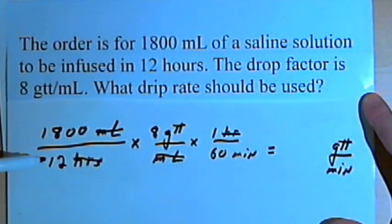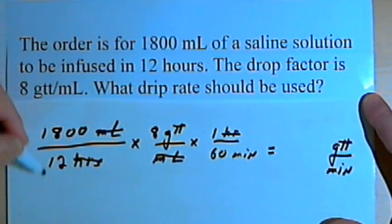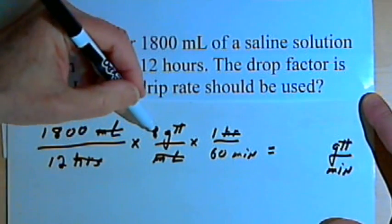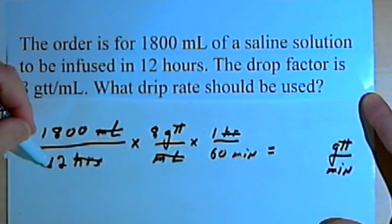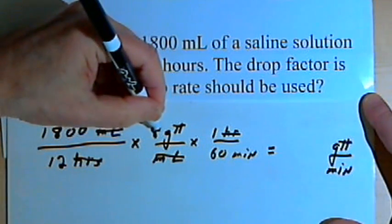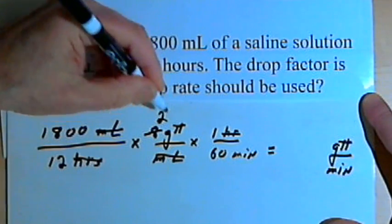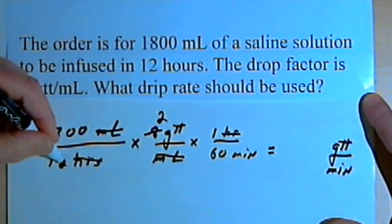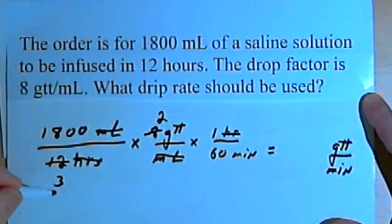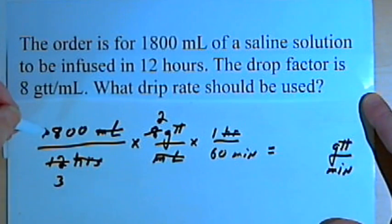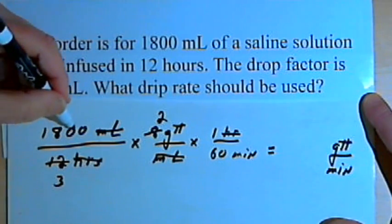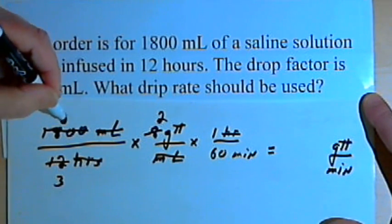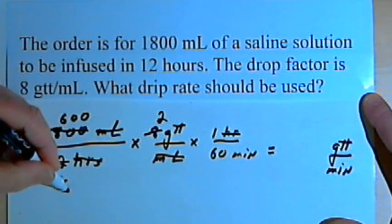Now let's simplify these numbers before we multiply. I've got 8 and 12, I can divide both by 4. So 8 divided by 4 is 2, and 12 divided by 4 is 3. I've got 3 and 1800, I can divide both by 3. 3 into 1800 goes 600 times, and 3 divided by 3 is 1.